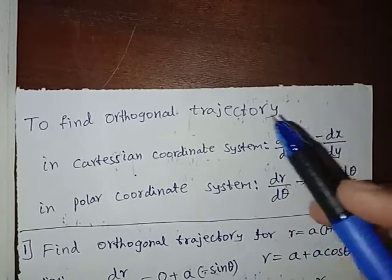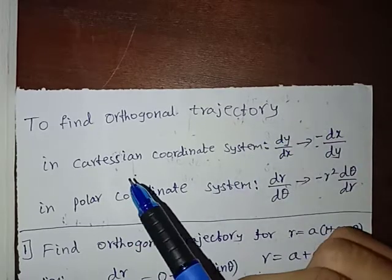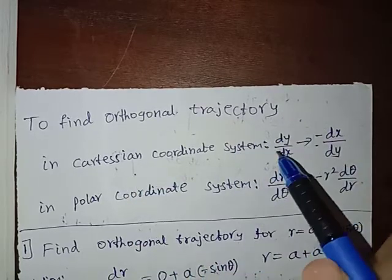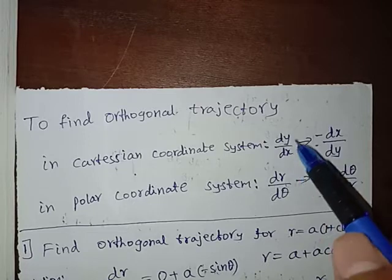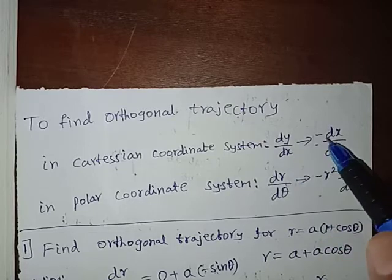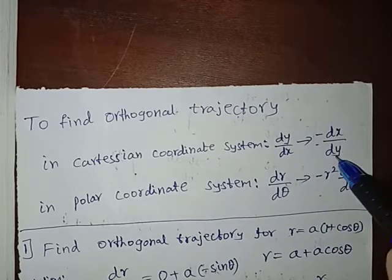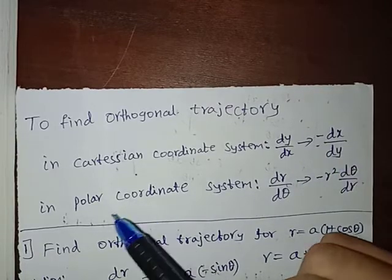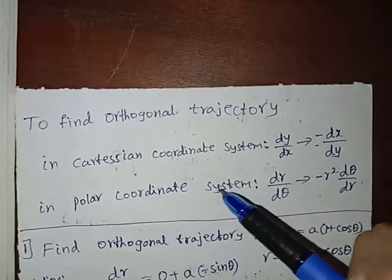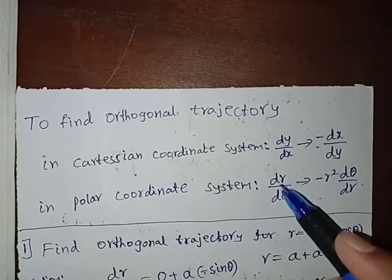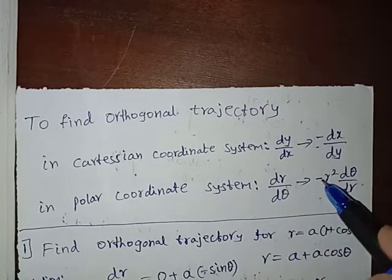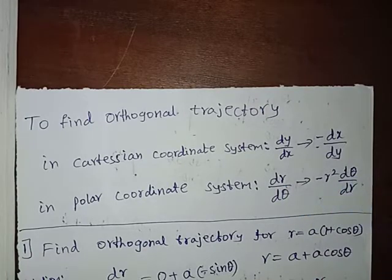To find an orthogonal trajectory in the Cartesian coordinate system, we have to change dy/dx to minus dx/dy. In the polar coordinate system, we have to change dr/dθ to minus r² dθ/dr.